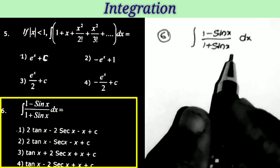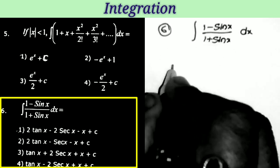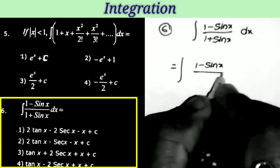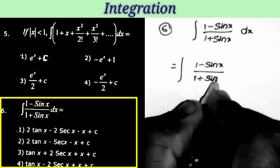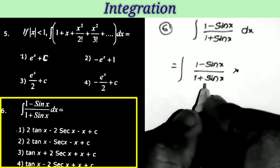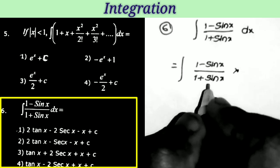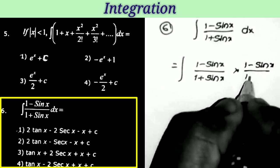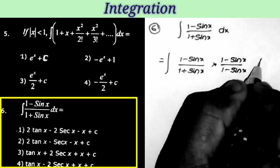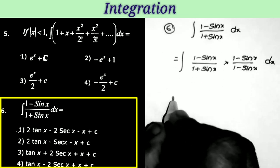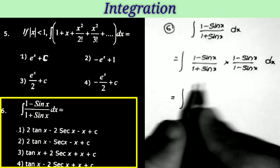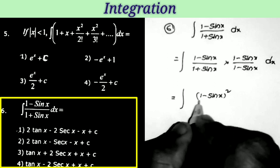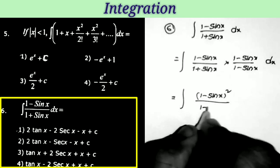Next question: integral of (1 − sin x)/(1 + sin x) dx. To solve this, we take rationalization. The denominator is 1 + sin x, so we rationalize by multiplying (1 − sin x)/(1 − sin x). This gives (1 − sin x)² in the numerator, and (1 + sin x)(1 − sin x) = 1 − sin²x in the denominator — using a² − b² = (a+b)(a−b).